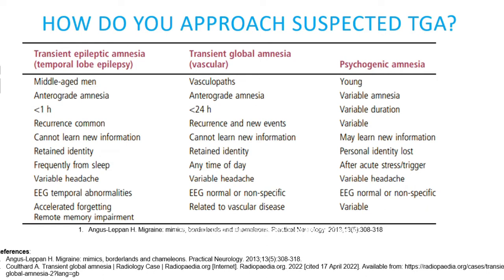Psychogenic amnesia is similar to transient global amnesia in that it may also be preceded by a stressful or significant life event. But unlike TGA, psychogenic amnesia causes loss of autobiographical memory and personal identity. Patients with psychogenic amnesia are also usually indifferent to their memory loss and they don't tend to ask repetitive questions.